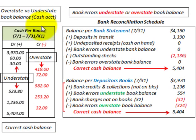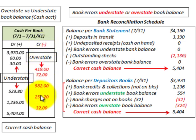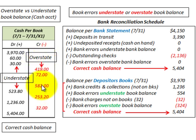In summary, for book errors that understate the book balance, we debit or increase our cash account. For book errors that overstate the book balance, we credit or reduce our cash account. When we make a debit or credit to cash, we also need a corresponding entry to an associated account as a balancing amount.